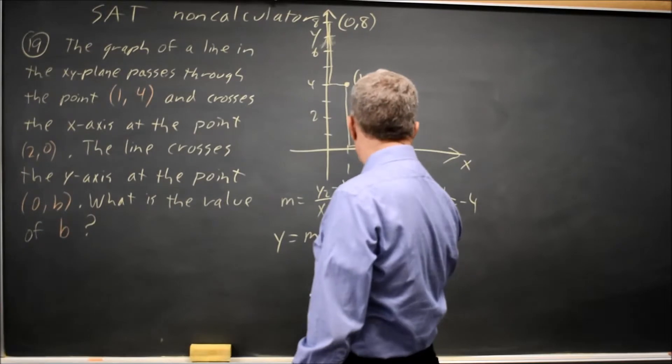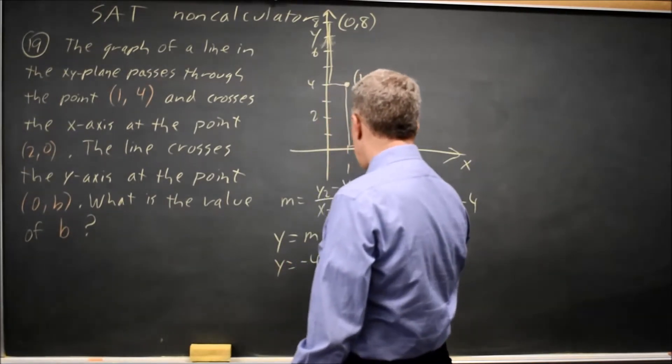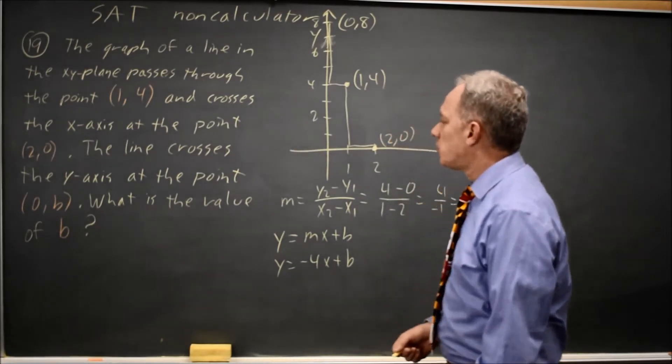Where m is negative 4, y equals negative 4x plus b, where b is the y-intercept.